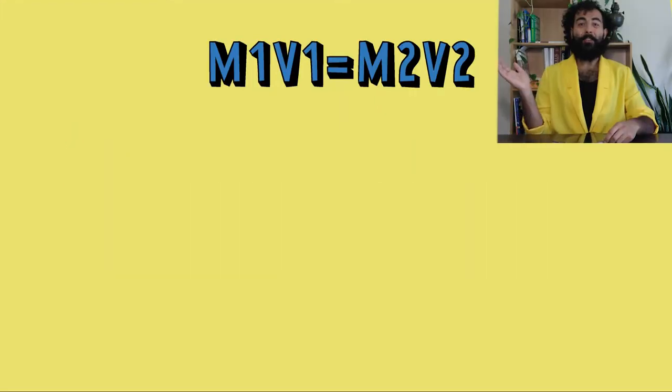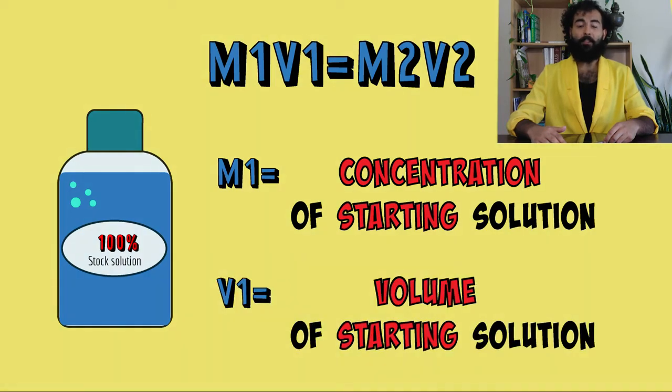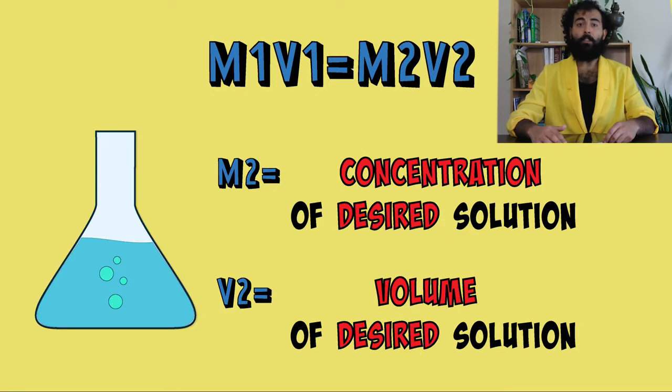In this formula, M1 is the concentration of the solution that you're starting with, and V1 is the volume of the solution that you're starting with. M2 and V2 are the concentration and the volume of your desired solution. As long as you know three of the variables, you just plug and play. The important thing to remember is which numbers go where.